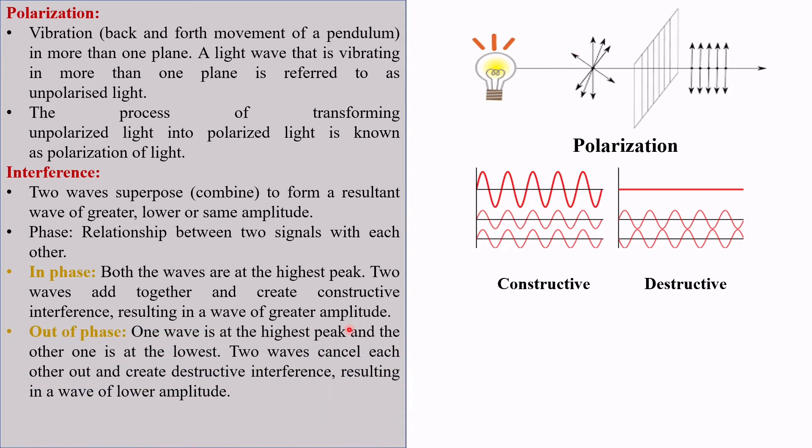When one wave is at its highest peak and the other one is at the lowest, we can say that they are out of phase. In that case, two waves cancel each other out and create destructive interference, resulting in a wave of lower amplitude.